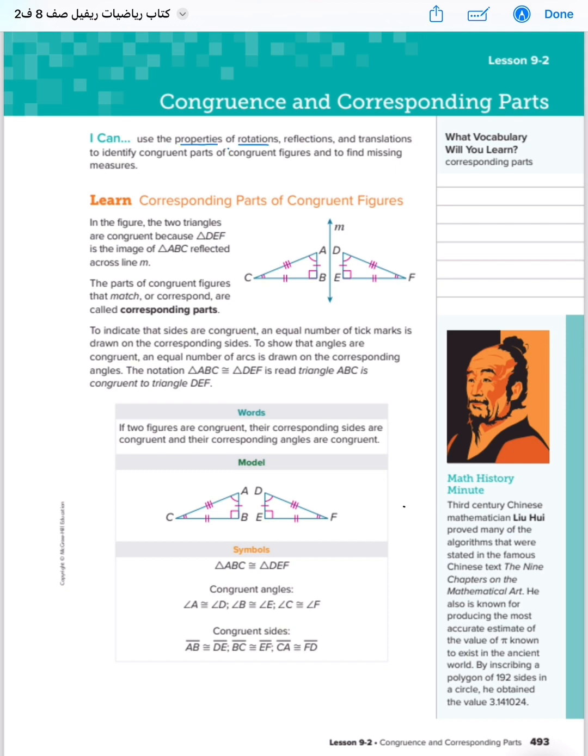You can use properties of rotations, reflections, and translations to identify congruent parts, congruent figures, and to find missing measures.